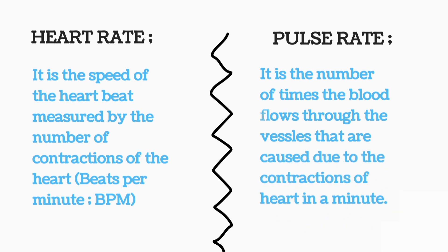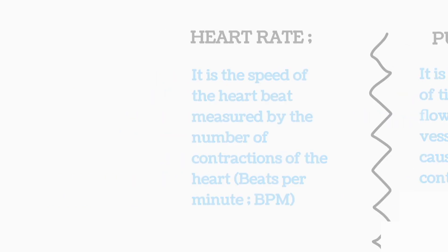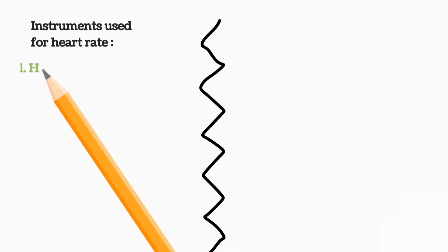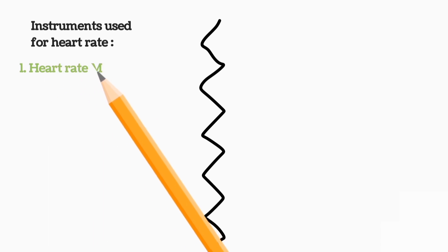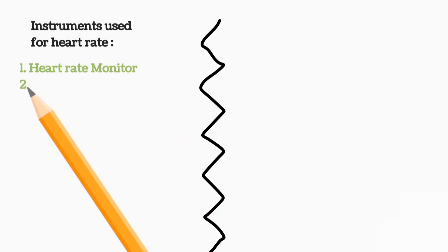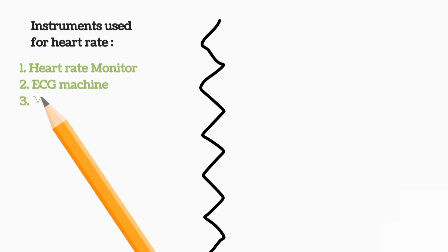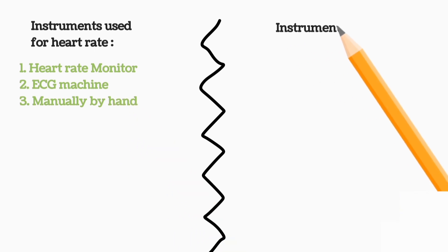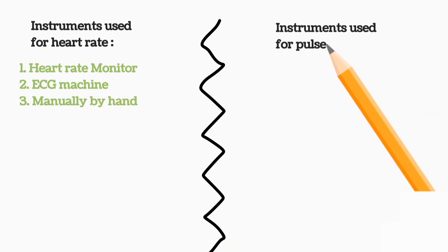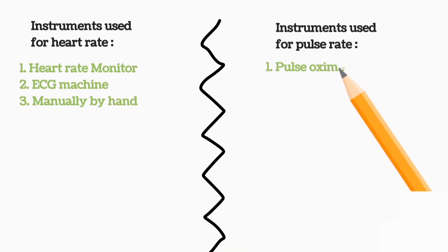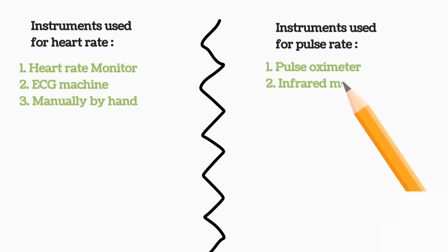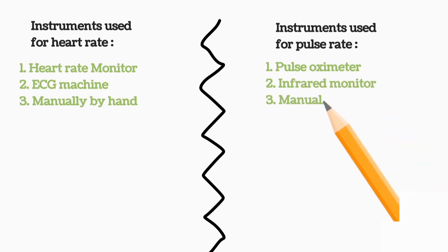The instruments used to measure heart rate are the heart rate monitor, the ECG machine, or manually by hand. The instruments used for pulse rate detection are the pulse oximeter, infrared monitor, and also manually by hand.